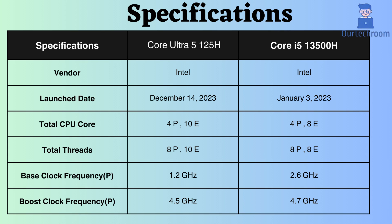When considering base clock frequency, the Intel Core i5-13500H operates at 2.6 GHz, while the Core Ultra runs at 1.2 GHz. Consequently, under normal loads, the Core i5-13500H outperforms the Core Ultra 5 125H. Moreover, in terms of boost clock frequency, the Core i5-13500H also surpasses the Core Ultra 5 125H. Hence, during heavy loads, the Core i5-13500H performs better.